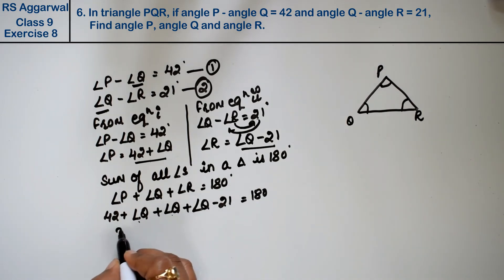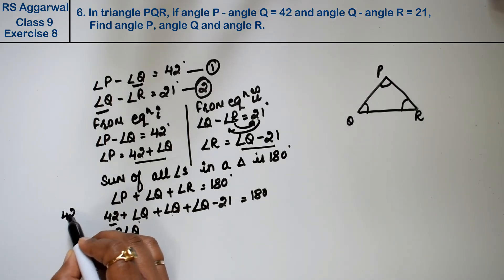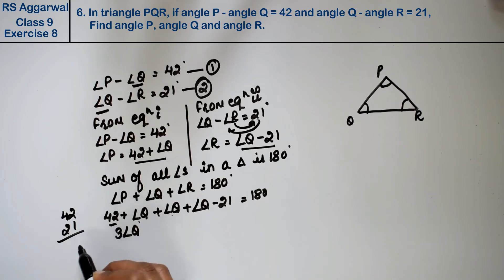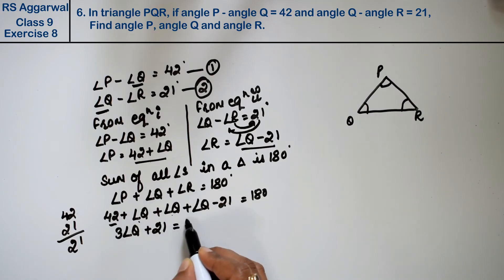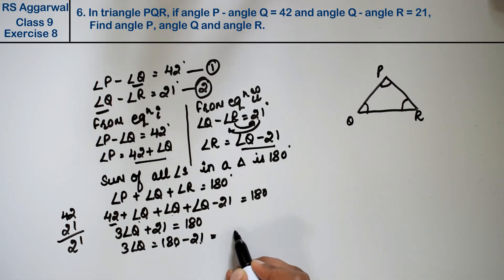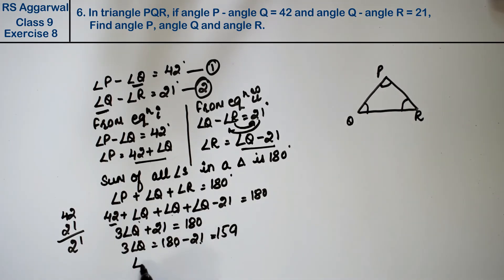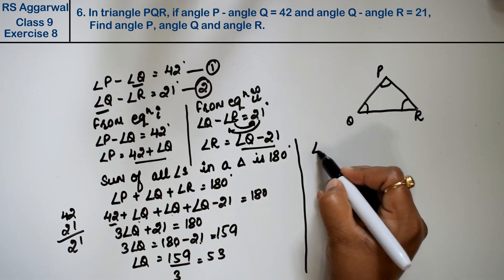We have three angle Q terms, giving 3 times angle Q. Then 42 minus 21 equals 21, so 3 times angle Q plus 21 equals 180 degrees. Therefore 3 times angle Q equals 180 minus 21, which is 159. Dividing by 3, angle Q equals 53 degrees.